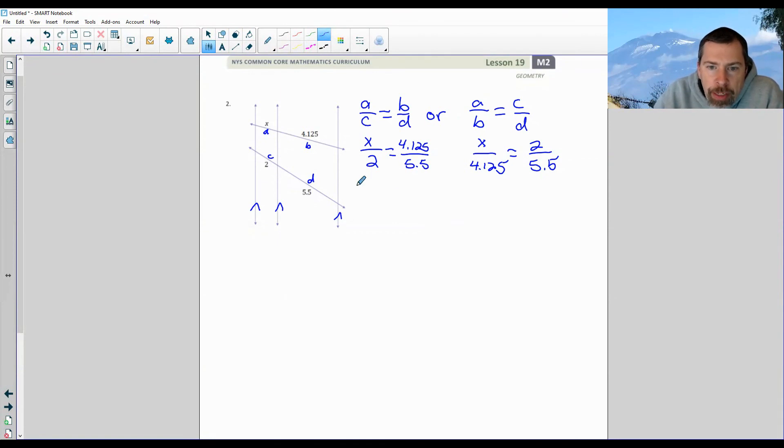So I would cross multiply and get 5.5x equals 4.125 times 2 is 8.25. Divide by 5.5 both sides. And I get x equals, these cancel. Let me get the calculator for this. 8.25 divided by 5.5. Enter. And I get 1.5.